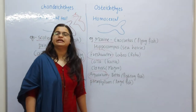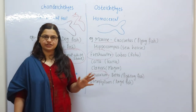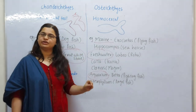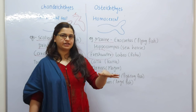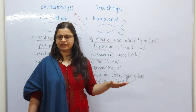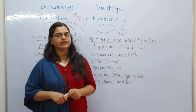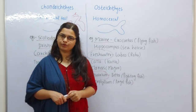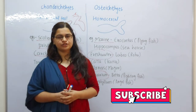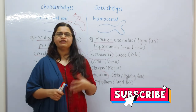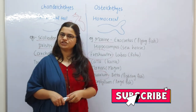So that was all about the differentiation of Chondrichthyes and Osteichthyes, and the characteristics of Pisces. This is how you have to write it in your notebook. If you have a 2-3 mark question, write all the points. If you have any doubts, let me know in the comment section. See you in the next session — thank you.